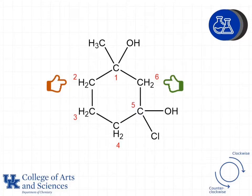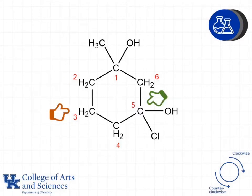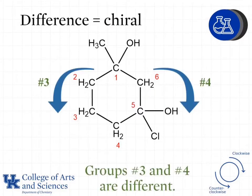We start with carbons two and six because they're immediately next to carbon one, the atom we're examining. Carbon two and carbon six are the same, so I go to the next atoms: carbon three in the counterclockwise direction and carbon five in the clockwise direction. At this point I see something different — carbon three is CH2, while carbon five is a carbon with an OH and a Cl attached. Therefore our counterclockwise group and our clockwise group are different from one another, groups three and four are different, and we have four unique groups attached to carbon one, making this a chiral carbon atom as well as a chiral compound.